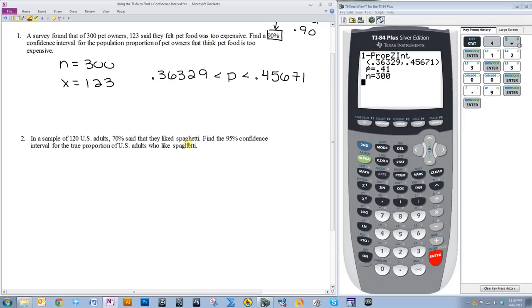In a sample of 120 U.S. adults, 70% said that they liked spaghetti. Find the 95% confidence interval for the true proportion of U.S. adults who like spaghetti.